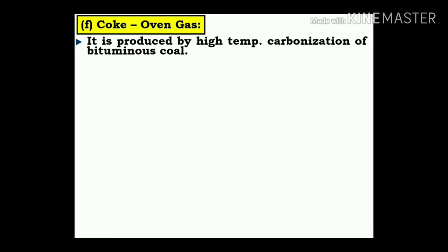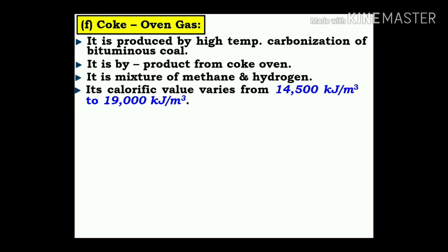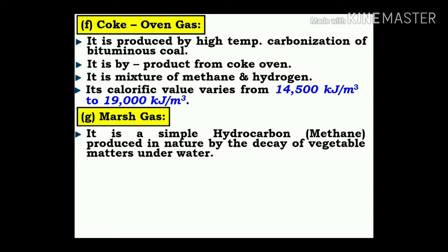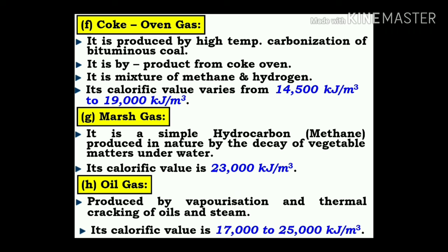Coke oven gas: it is produced by high-temperature carbonization of bituminous coal. It is a by-product of the coke oven, a mixture of methane and hydrogen. Its calorific value varies from 14,500 kJ/m³ to 19,000 kJ/m³. Marsh gas: it is a simple hydrocarbon produced in nature by decay of vegetable matter under water. Its calorific value is 23,000 kJ/m³. Oil gas: produced by vaporization and thermal cracking of oils and steam, with a calorific value in the range of 17,000 to 25,000 kJ/m³.